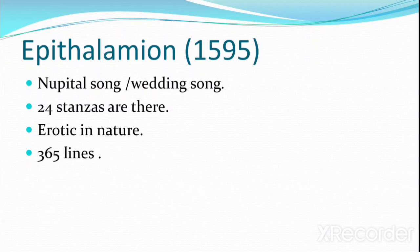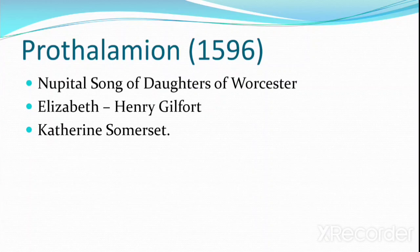The next important work by Spenser is Epithalamion, published in 1595. It is a nuptial song — a wedding song of his marriage with Elizabeth Boyle. There are 24 stanzas in this poem, and one of the important features is that it is erotic in nature. There are about 365 lines in this poem.